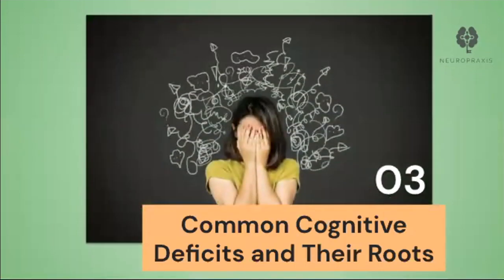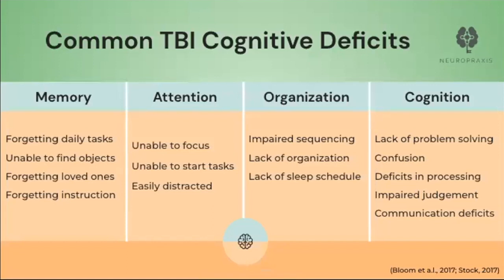Now we'll go over a general overview of common TBI cognitive deficits and their roots. Memory is commonly impaired following a brain injury and can look like forgetting to brush your teeth, remembering to eat throughout the day, or even forgetting the names of children and close friends. Impaired attention is very common with TBI survivors during recovery and can look like inability to focus on one task at a time, trying to juggle too many things at once, or difficulty starting or completing a task because they are easily distracted by sounds or people entering the room. Impaired sequencing skills may show as forgetting the order of steps in a recipe or the sequence of events.